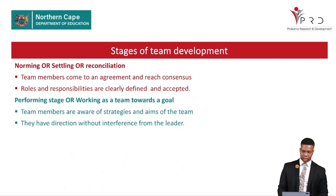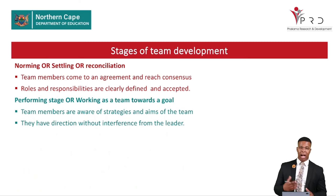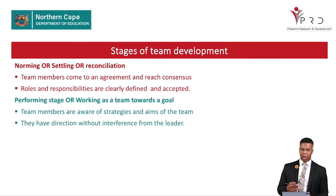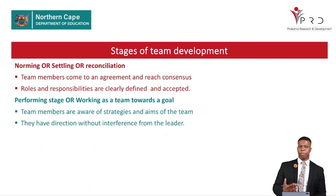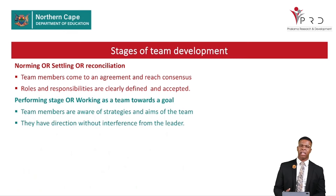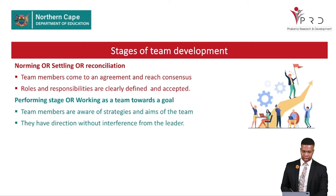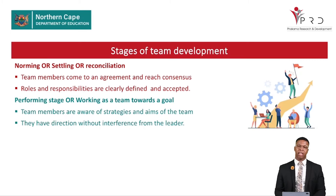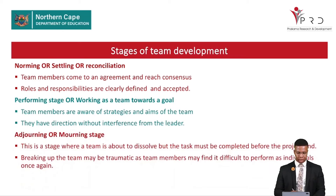The fourth stage is performing, or working as a team towards a goal. During this stage, team members are aware of the strategies and aims of the team and have direction without interference from the leader. Every member is now functional within the team — they know what to do and do not need the team leader to support them because everyone understands the task at hand.